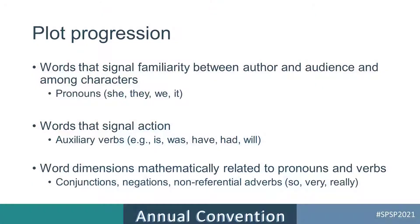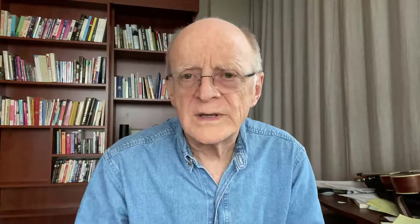The second dimension is plot progression. Once you've set the stage, now stuff can happen. Once you know all the characters, objects, and locations, the author can use shortcuts — and that's what pronouns essentially are. Instead of saying "Mr. Smith," you can just say "he." The real action occurs with auxiliary verbs — words like "is," "was," "have," "had," "were" — which tend to expand action. We expected and found that the deeper you got into a story, the more plot progression there is: more pronouns, more auxiliary verbs. This held up across every one of our genres.